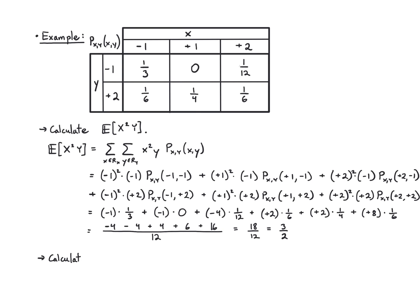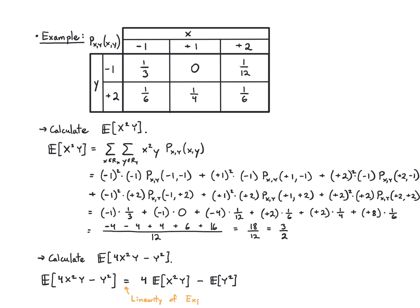Now suppose we want E[4x²y − y²]. Since I already have the individual expectations, I can use linearity: 4·E[x²y] − E[y²] = 4·(3/2) − (11/4) = 6 − 11/4 = 24/4 − 11/4 = 13/4.